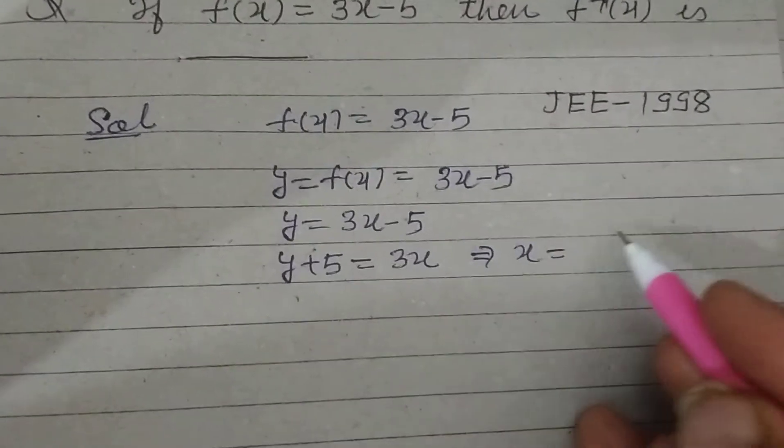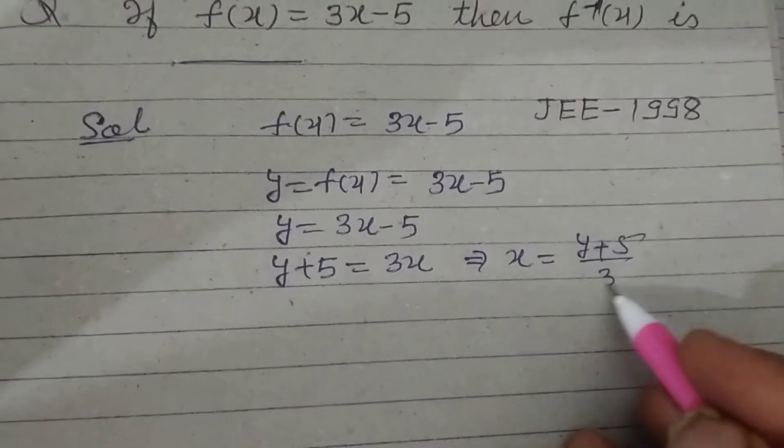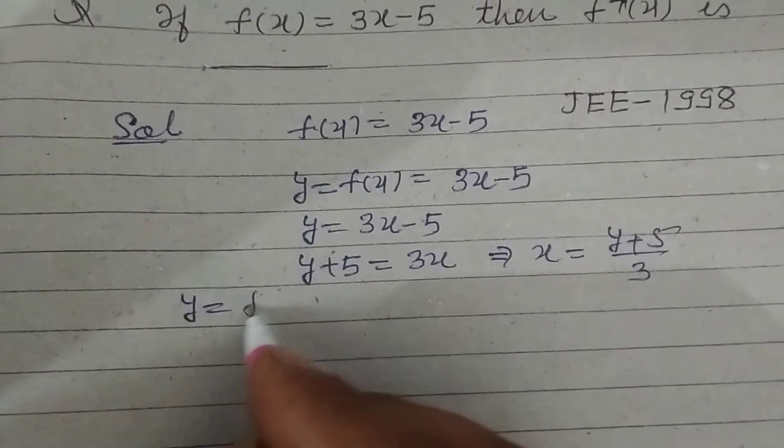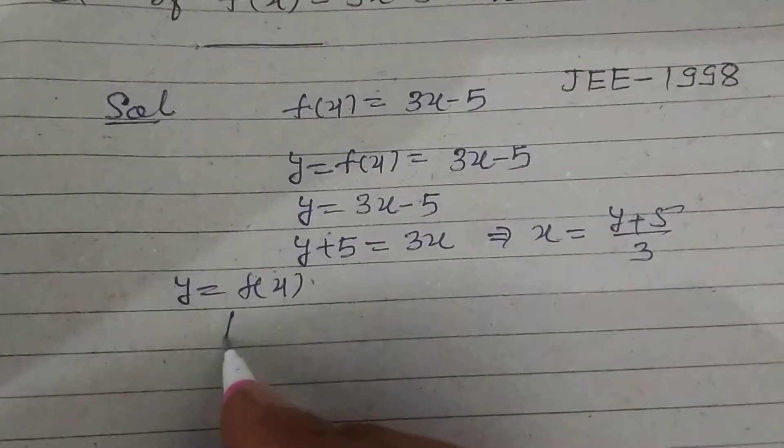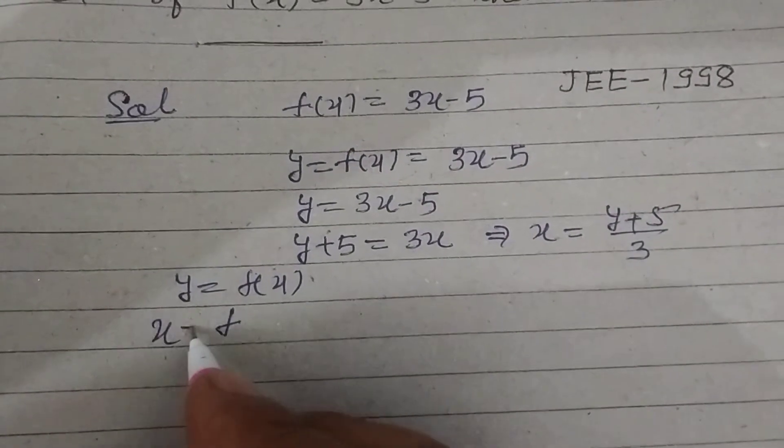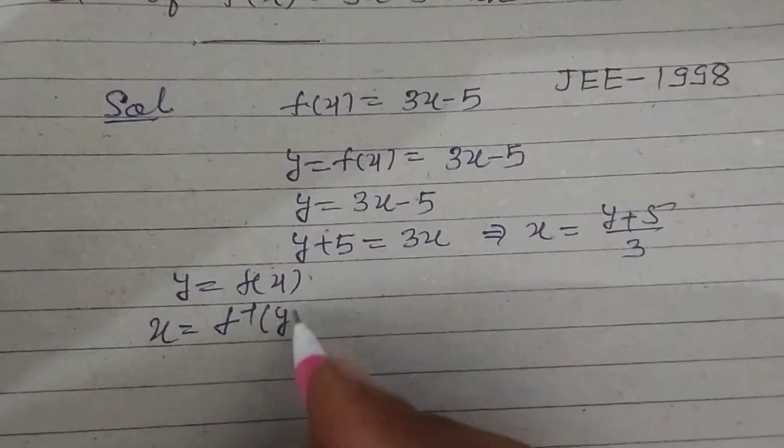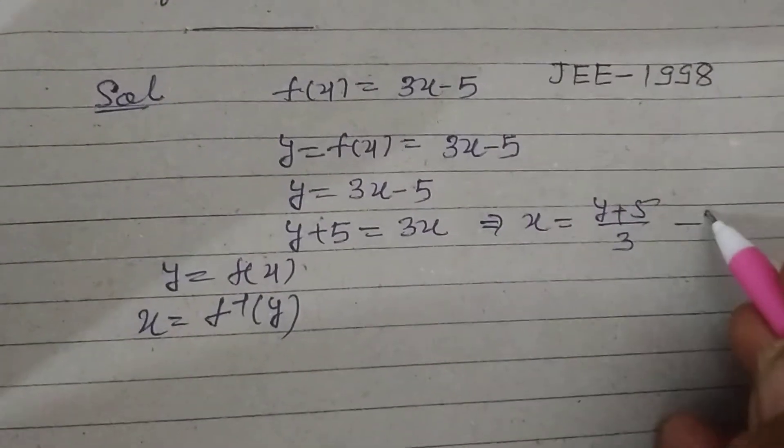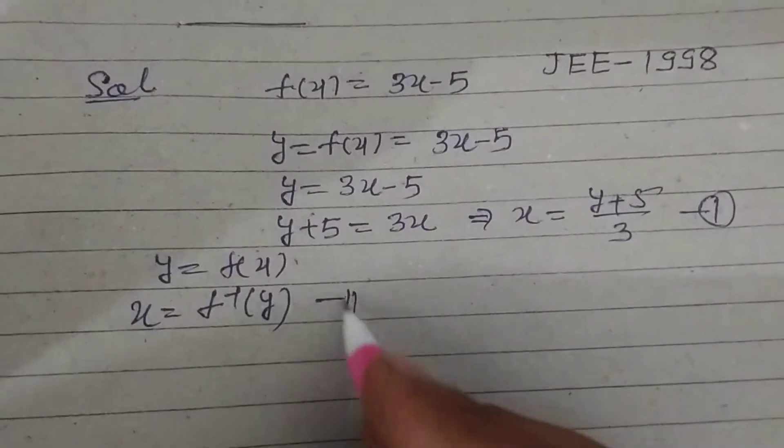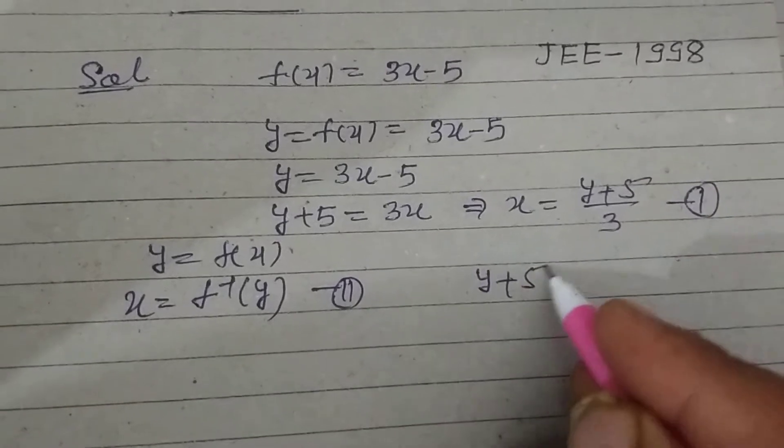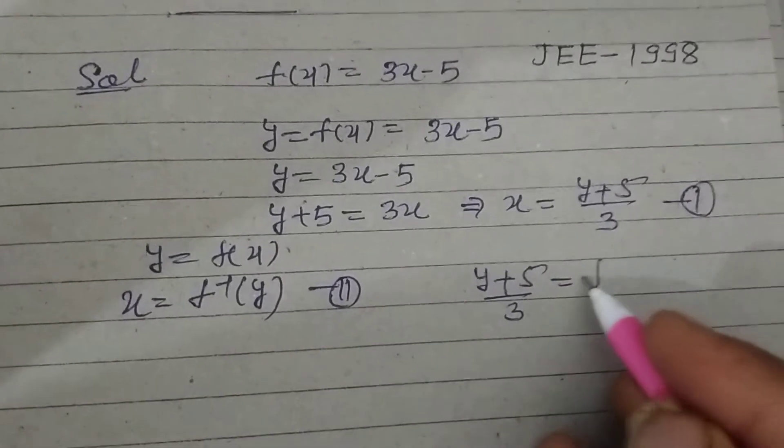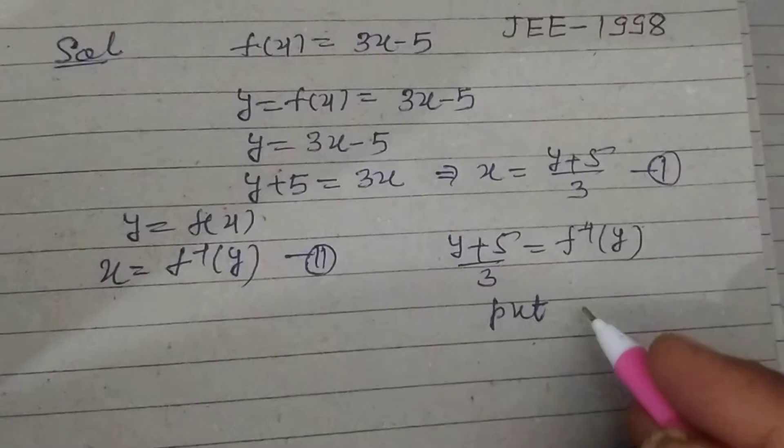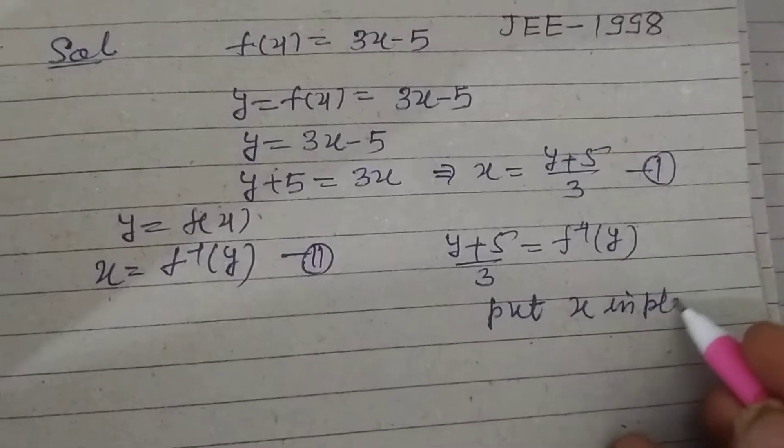Therefore, x equals y plus 5 by 3. From here, y equals f(x), so f(x) equals f inverse y. We put this from first and second: x is y plus 5 by 3 equals f inverse y. Put x in place of y.